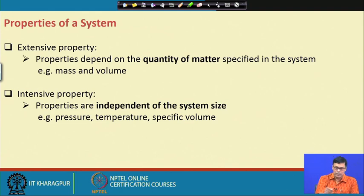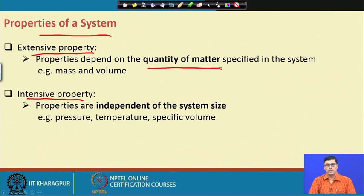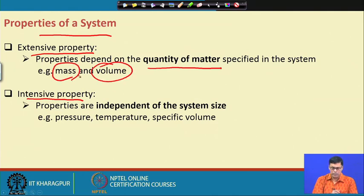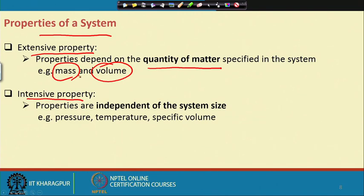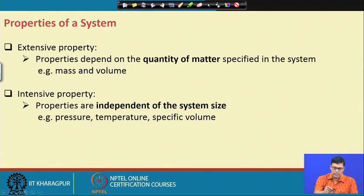Another classification of system properties gives us extensive properties and intensive properties. Extensive properties depend on the quantity of matter specified in the system — for example, mass and volume. Intensive properties are independent of system size — for example, pressure, temperature, and specific volume. These two property types are the main classifications in a thermodynamic system.